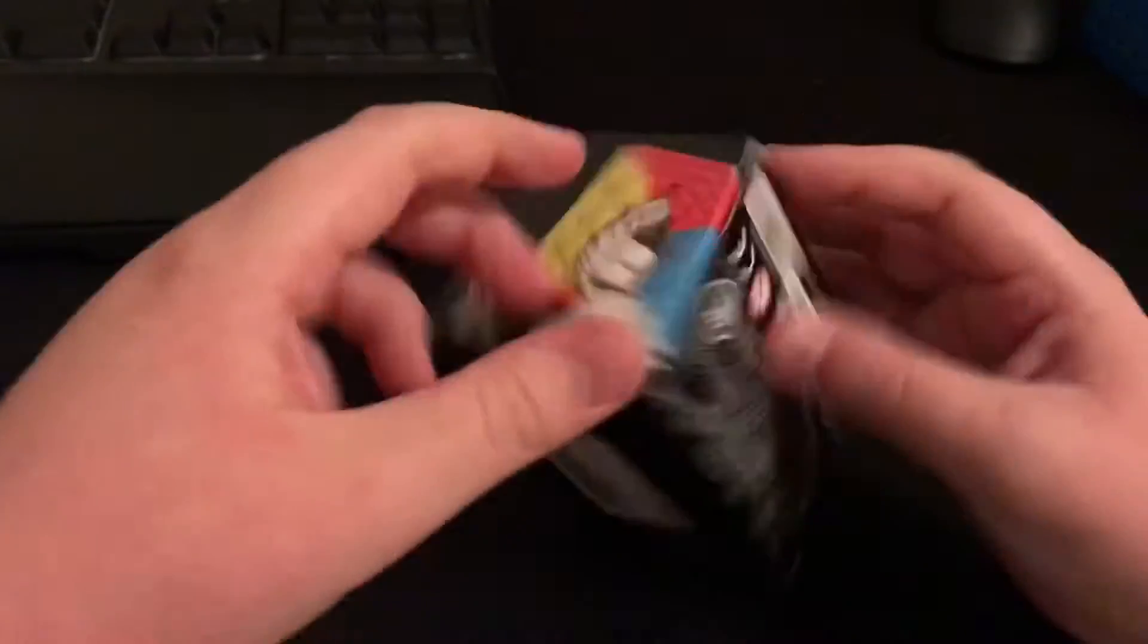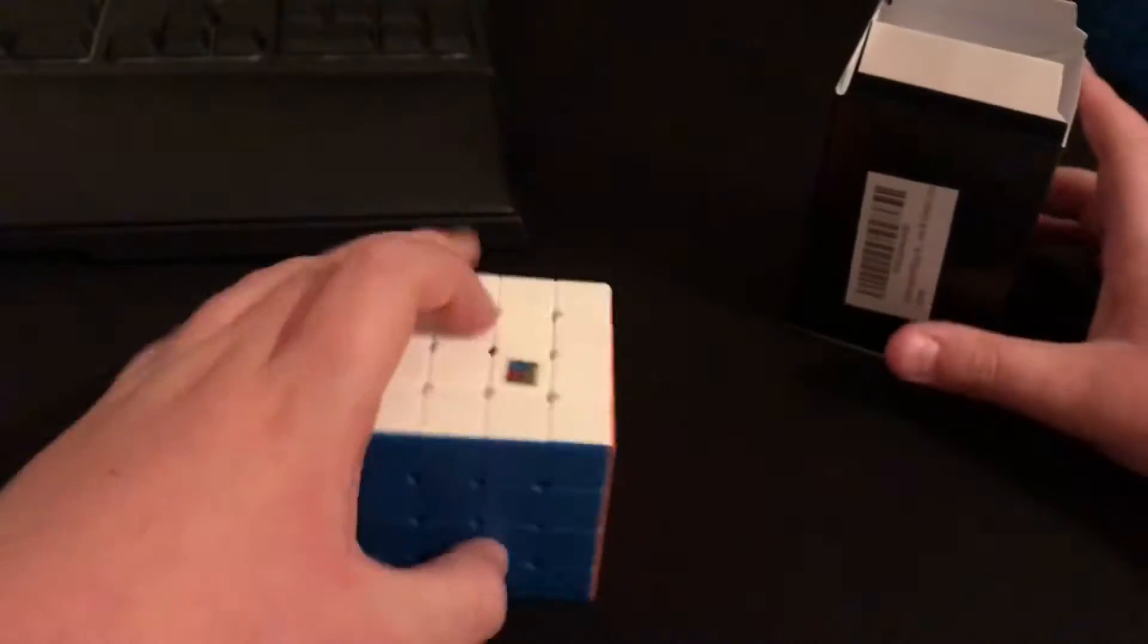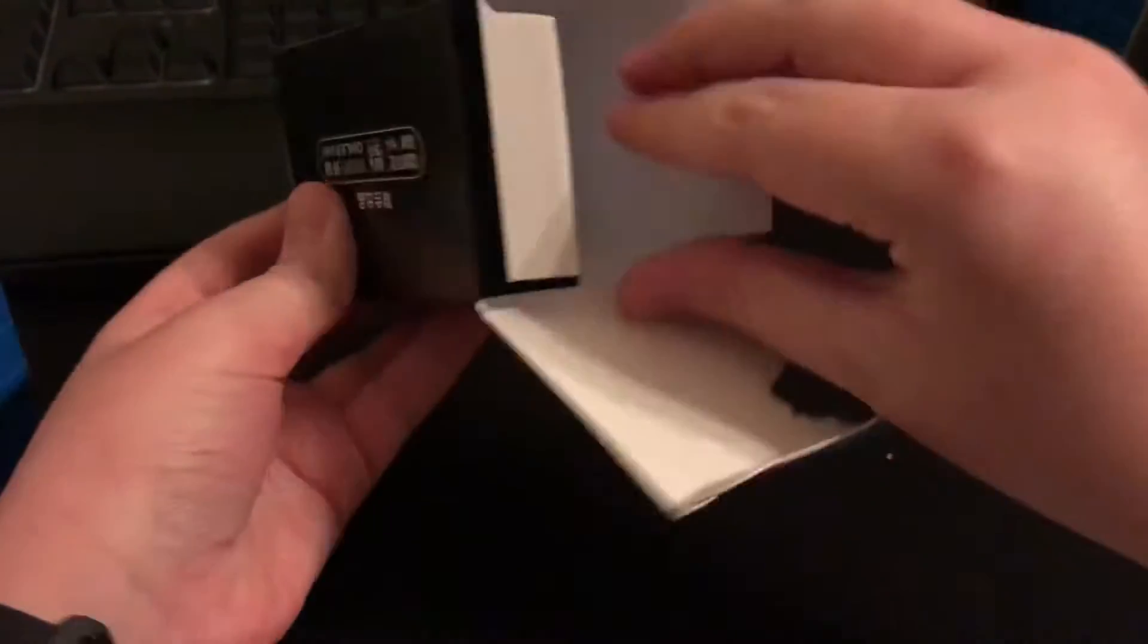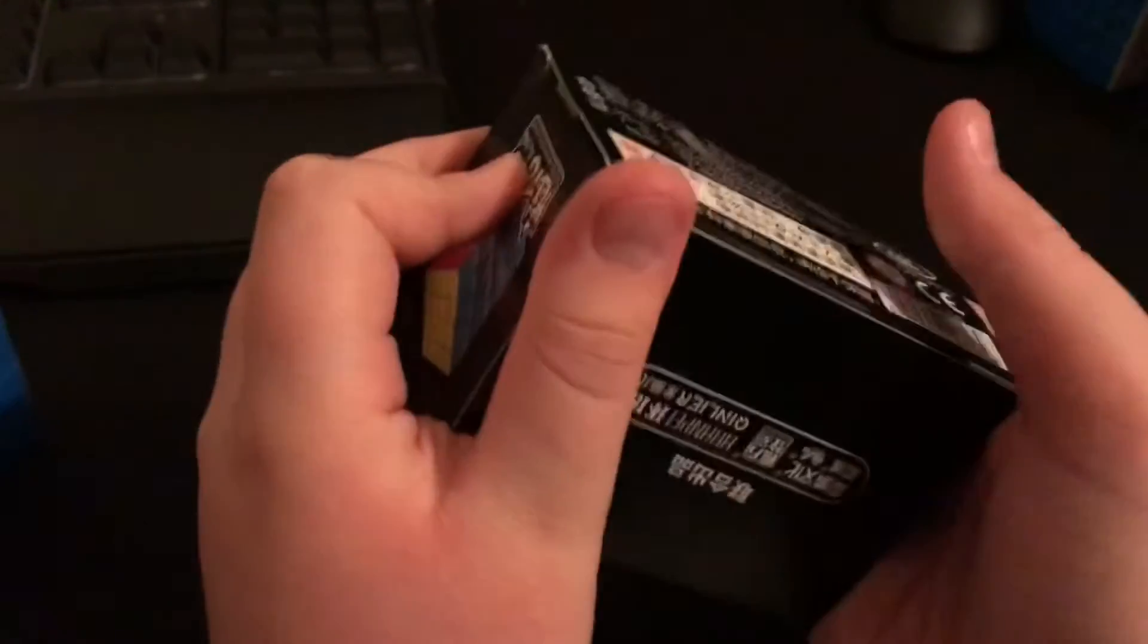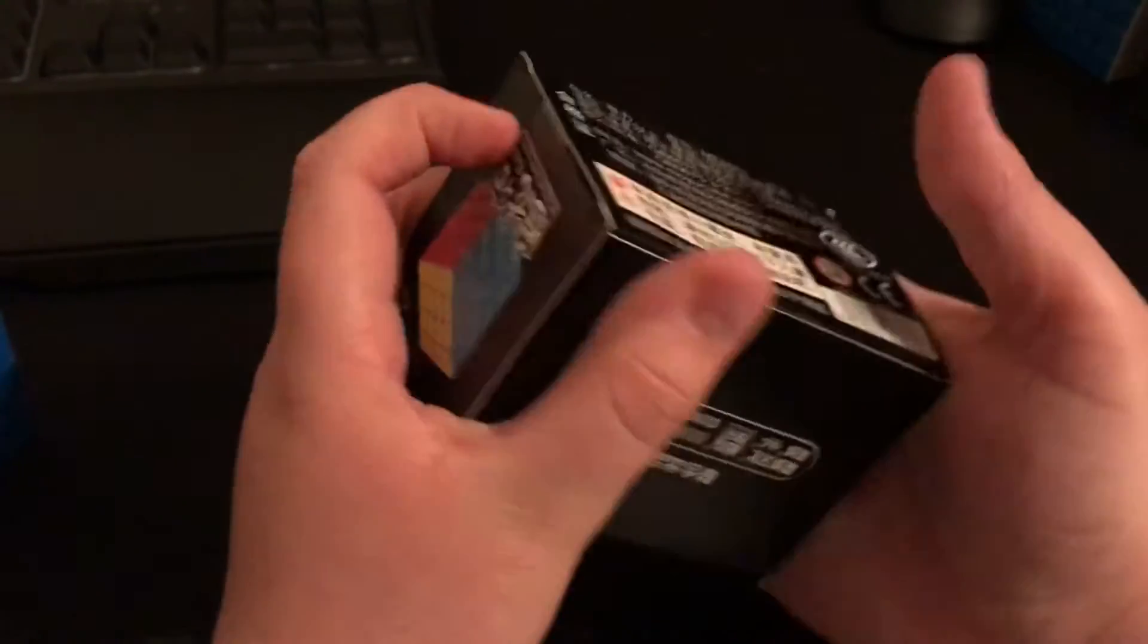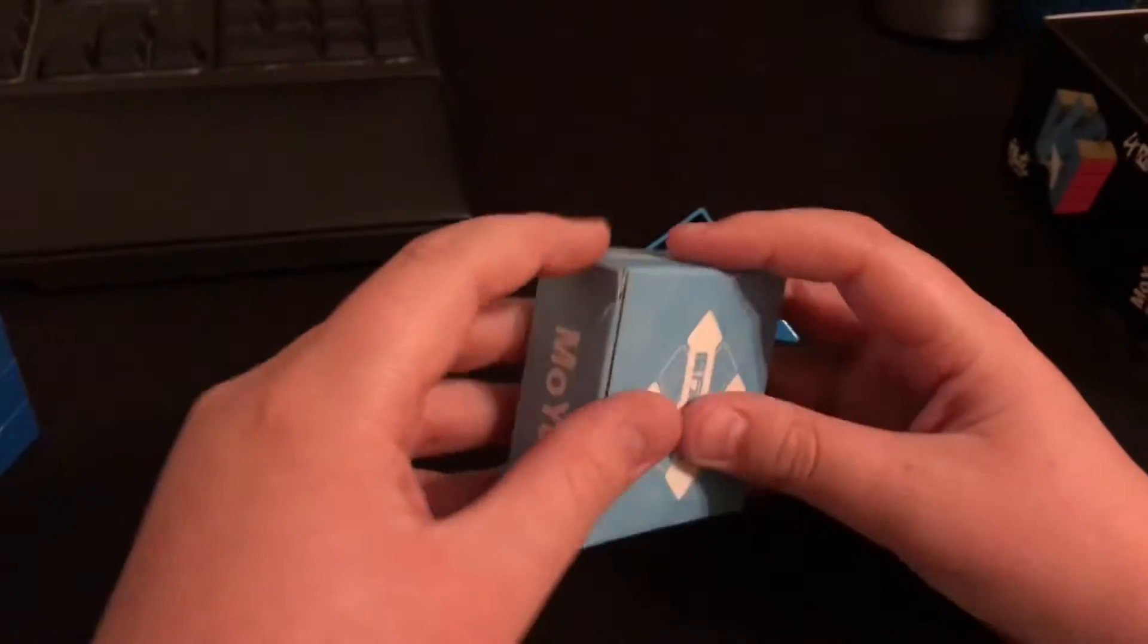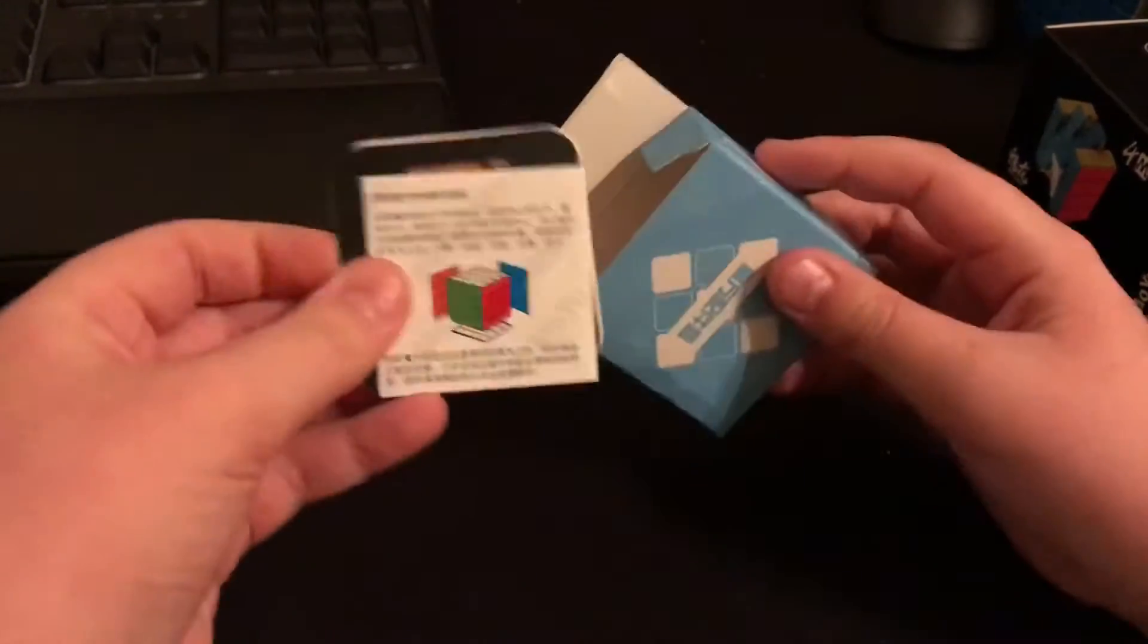This one here, let me open it. It's really good actually. Here is the cube, here is the stand, and then there's another thing inside. Here is the Moyu accessory box, and inside this is just some manuals and a Moyu screwdriver.